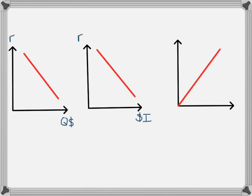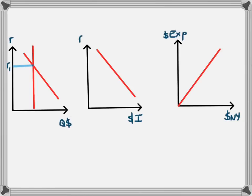These three diagrams can actually be represented as one big diagram with three separate parts. We'll look at the case of an expansionary policy: with an expansionary policy, what we are hoping for is for the interest rate to fall, and by the interest rate falling, investment will increase and aggregate demand will also increase.